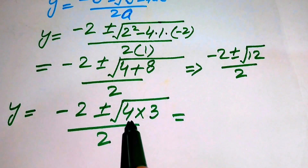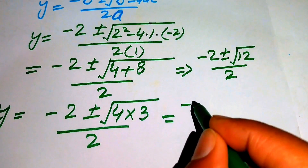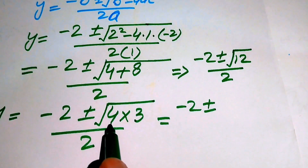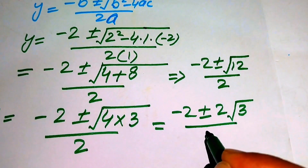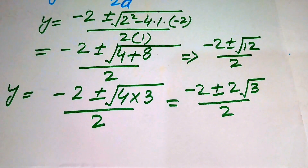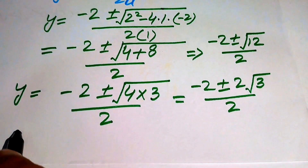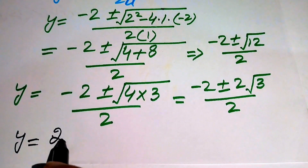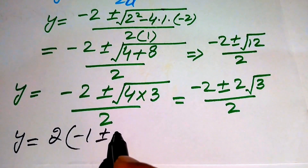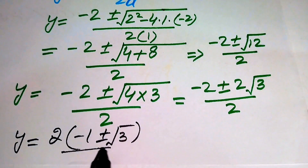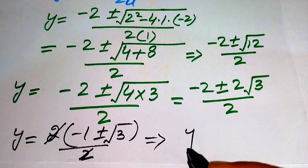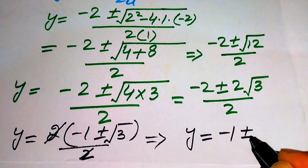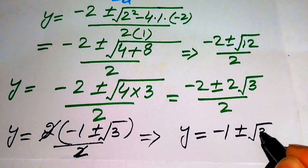We separate the square root: square root of 4 becomes 2, giving us minus 2 plus or minus 2 times square root of 3, all divided by 2. Taking the common factor of 2 from the numerator gives y equals to 2 times (minus 1 plus or minus square root of 3) divided by 2. Canceling the 2s, we obtain y equals to minus 1 plus or minus square root of 3.